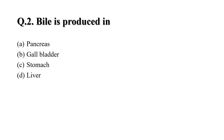Question 2: Bile is produced in — Option A: Pancreas. Option B: Gallbladder. Option C: Stomach. Option D: Liver. Your correct answer is Option D, the liver.